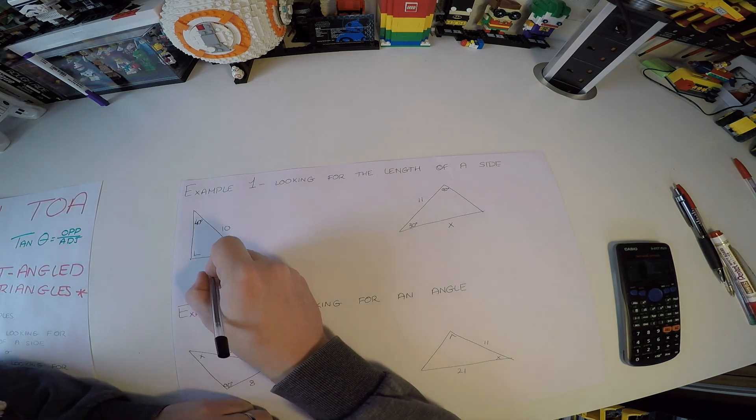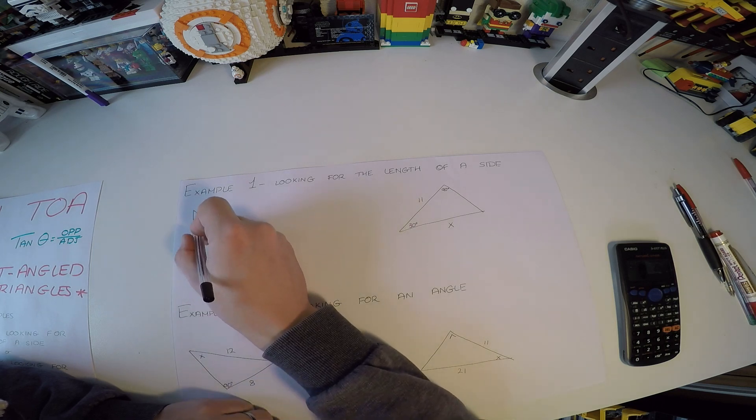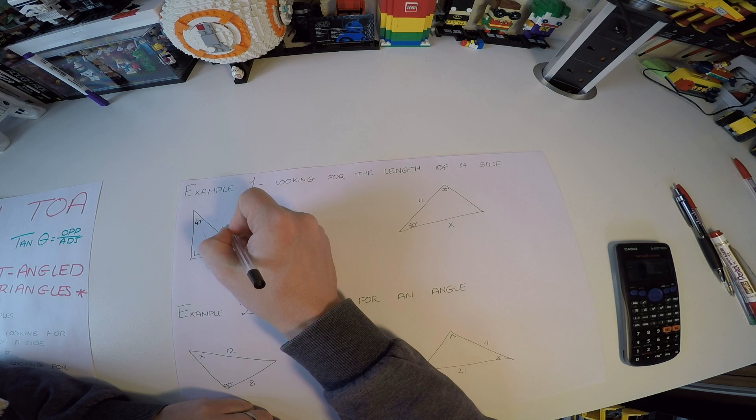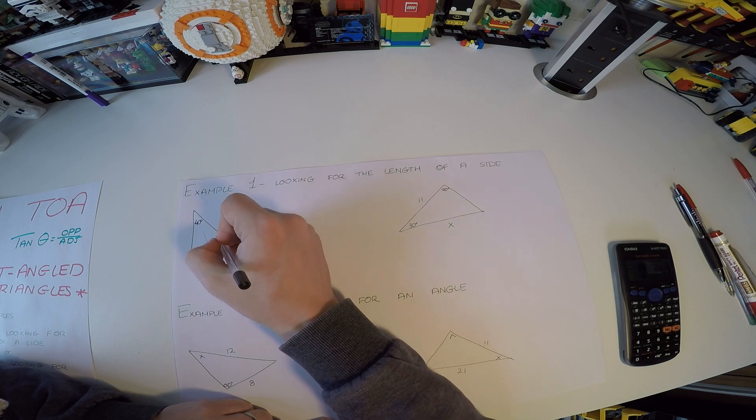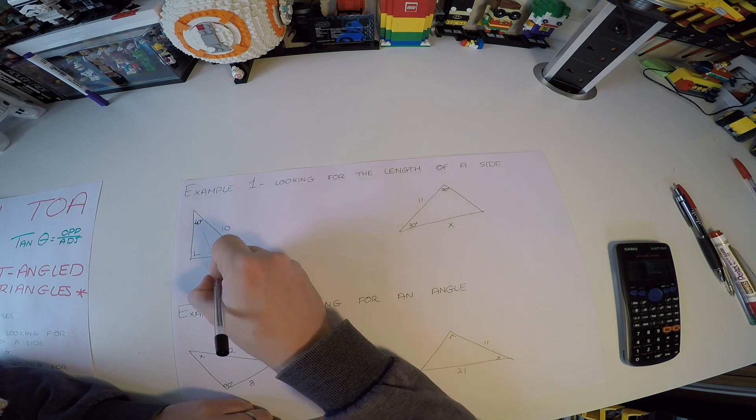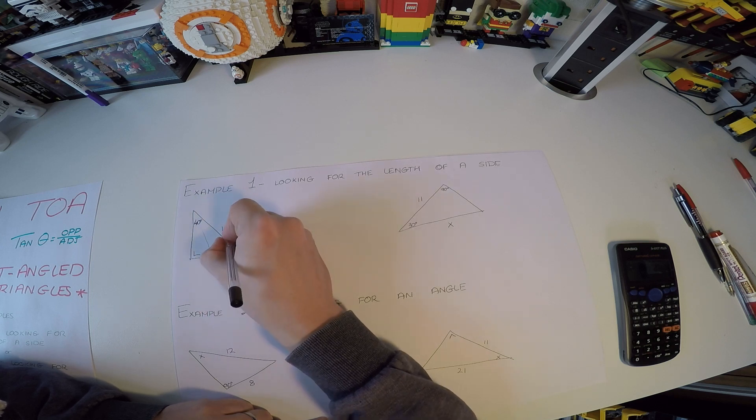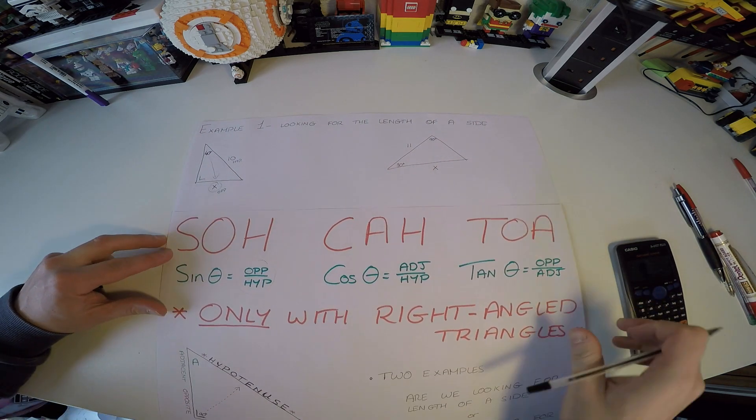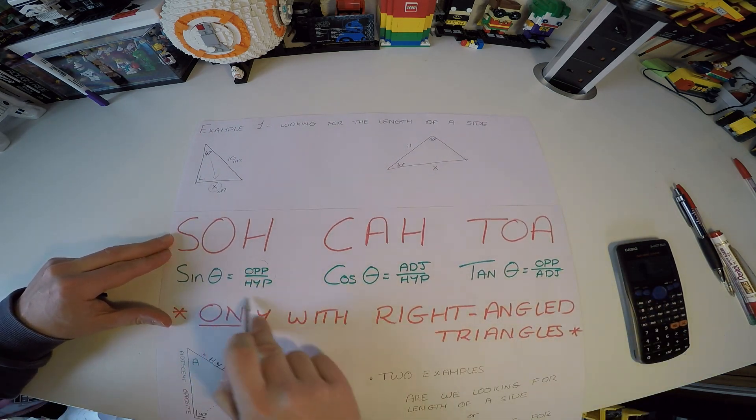So what do we have? We're looking for this side, X. Now, looking at the angle we have, we can see that X is the opposite side. 10, you should see now, is the hypotenuse, which is the longest side across from the right angle. So we have to use an opposite side formula that also includes a hypotenuse. When we look at our rules, we can see that which one uses opposite and hypotenuse? It's sine here.